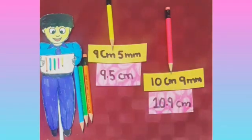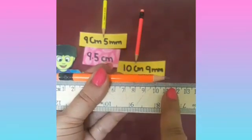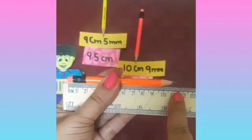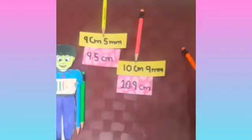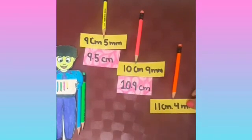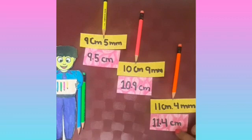Now we will measure the length of the third pencil. Look at the scale very carefully. Its length is 11 cm and 4 mm. We can write it as 11 cm and 4 mm, or also as 11.4 cm.